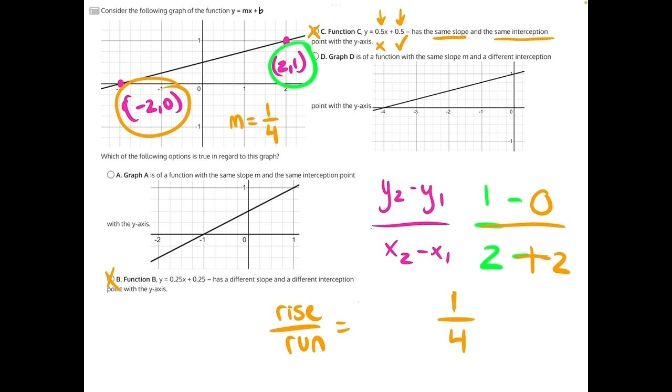We are going to rise 1 and run 4. So we will be going up 1 and to the right 4, since they're both positive numbers. And since both of these graphs are well gridded out, this will be quite easy to do.